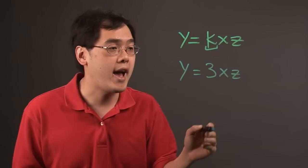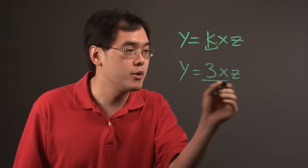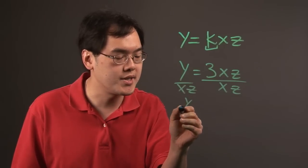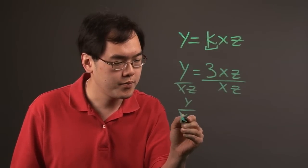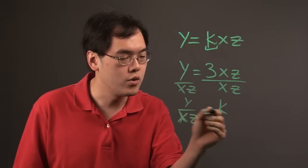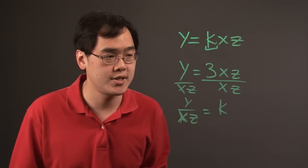The idea here is if you divide both sides by, let's say, x times z, then you can make the case that the ratio of y to x×z equals a constant.